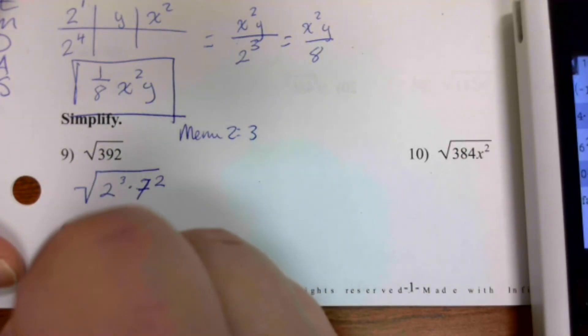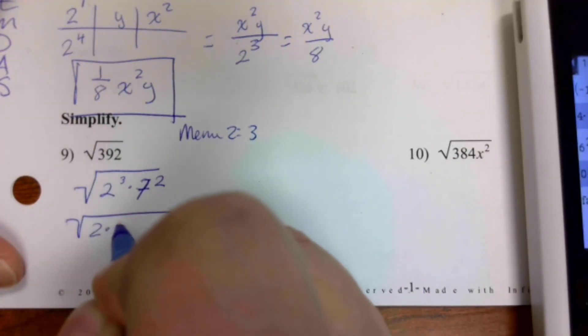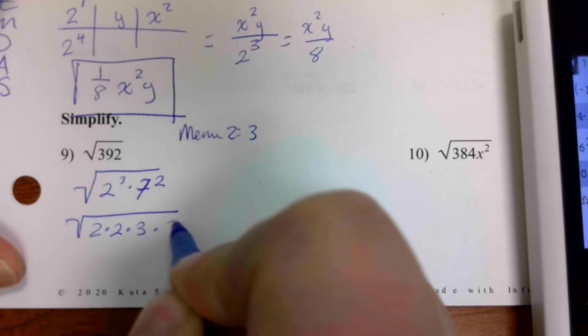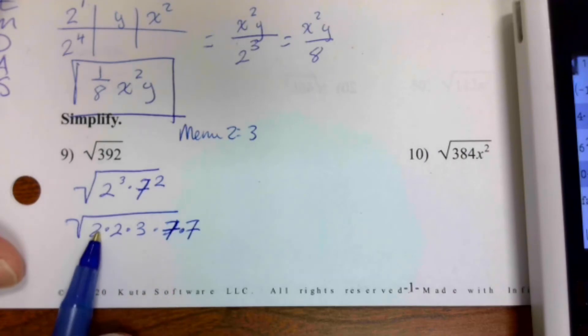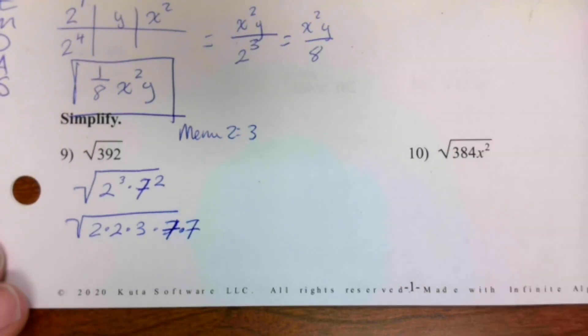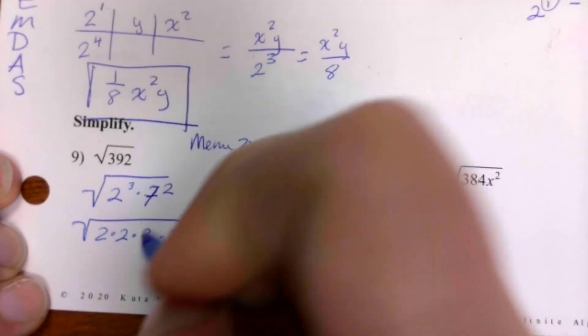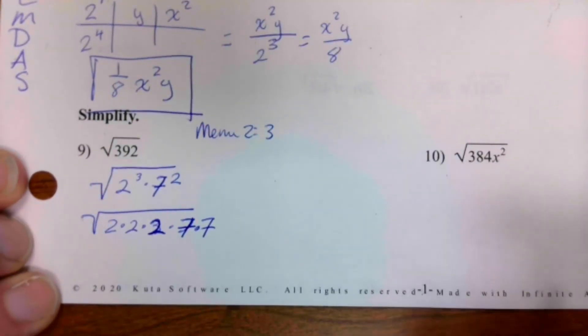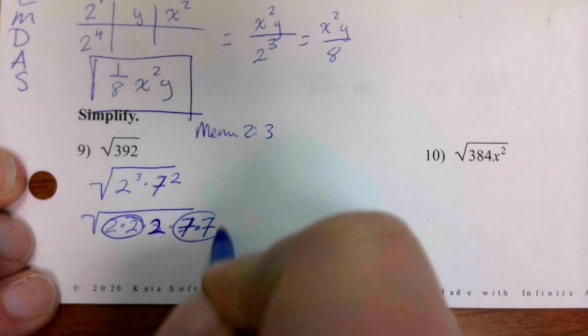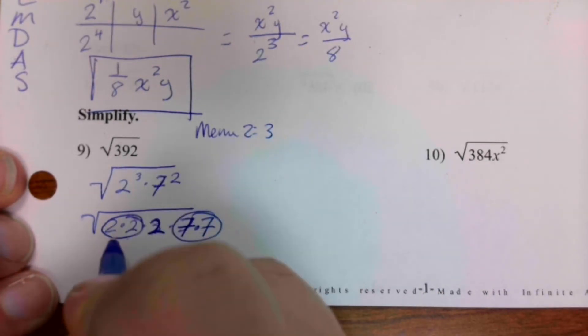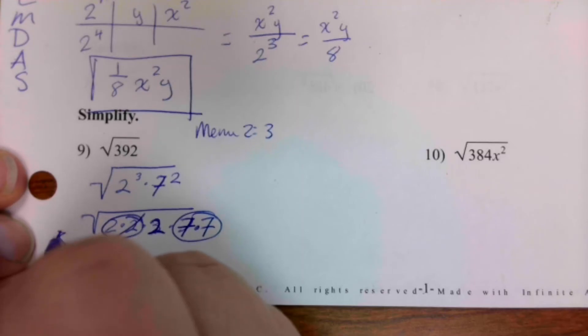We're going to write out what this means: one, two, three, one, two. Make sure you have your dots. Oh, apologies, this should be a two. So I need to circle up groups of two. Everything with a group comes outside.